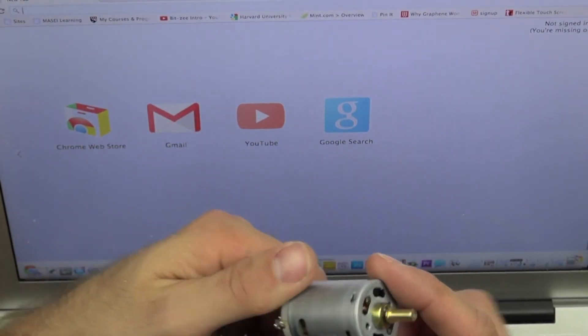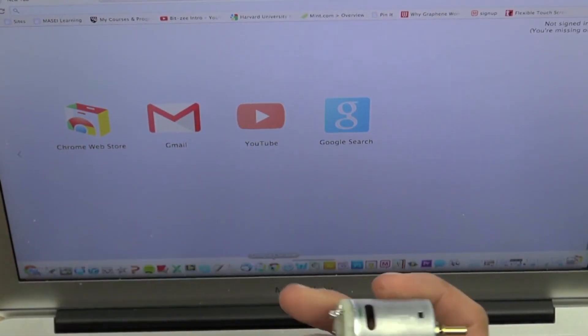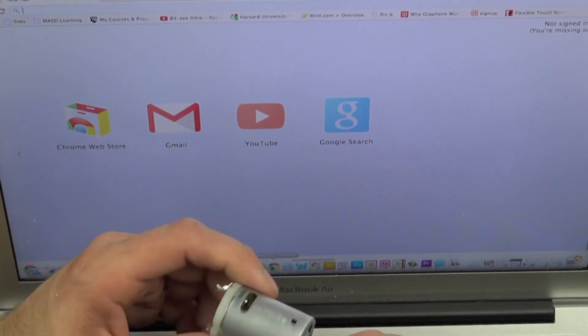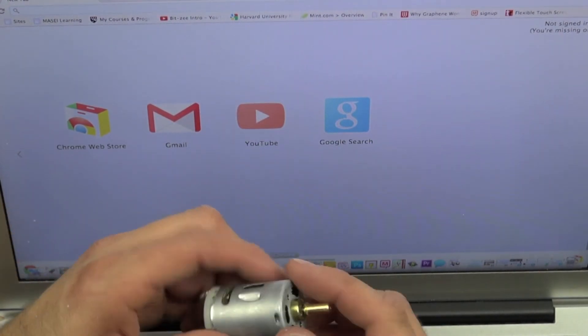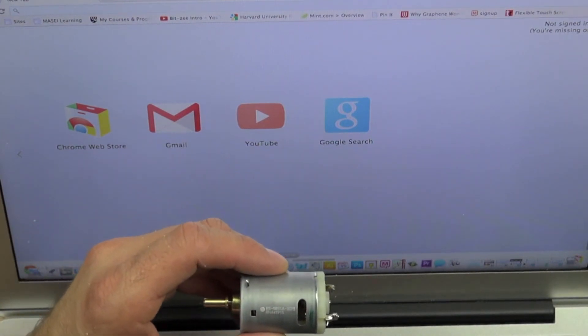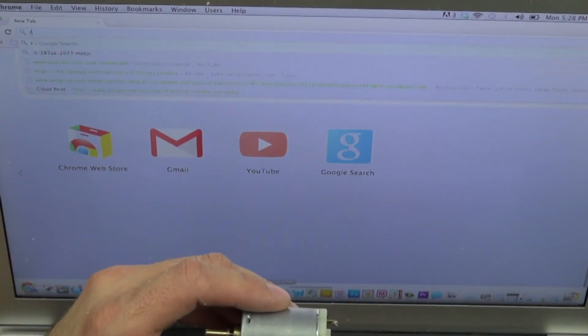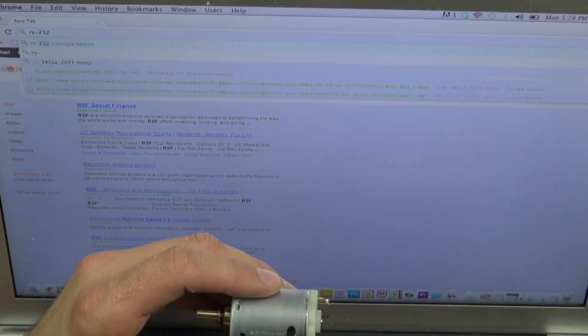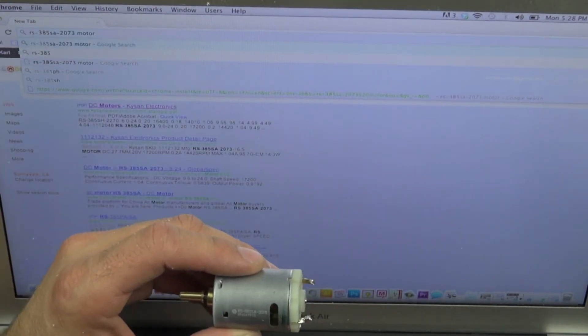We've got our motor here. Let's flip it around and see if we can find the specifications on it. And yeah, there's some printed text right here. So we can type that printed text into the computer and determine what kind of motor this is and what the specifications are.